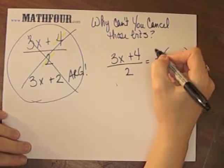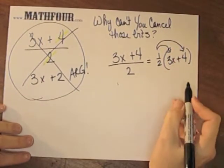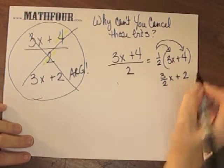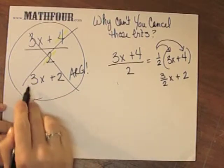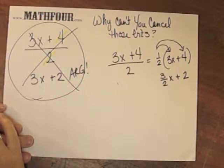So if you look at it this way, you use the distributive property to get 3 halves x plus 2, which is not the same here, right? Because you totally left this guy out of the equation. Pardon the pun.